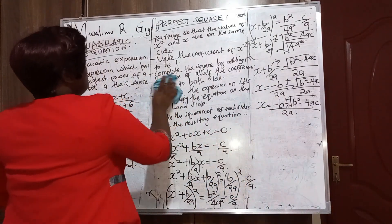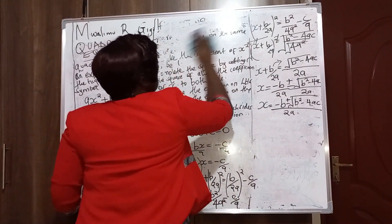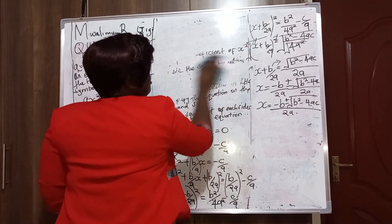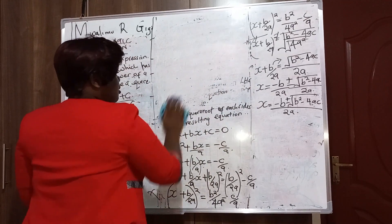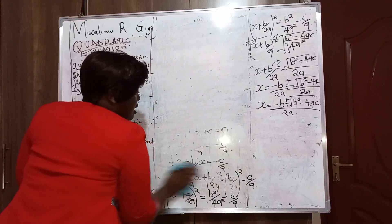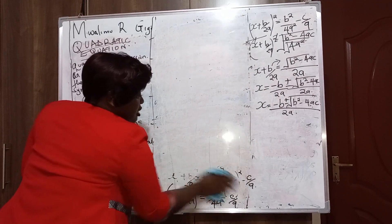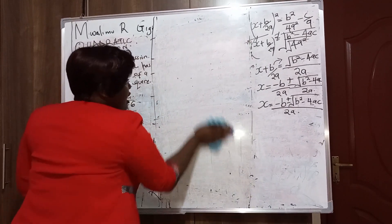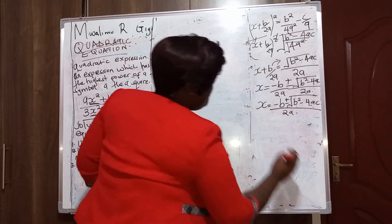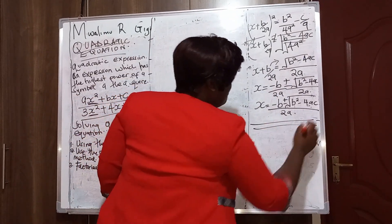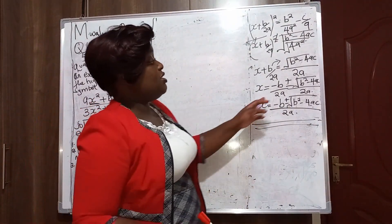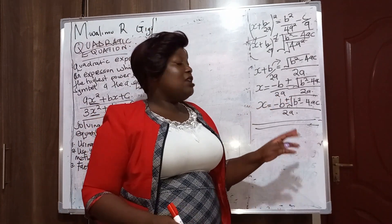The next thing we want to do is solving the equation using the quadratic formula. We have derived the quadratic formula using the perfect square method.